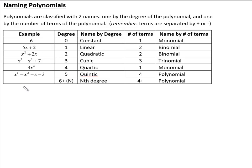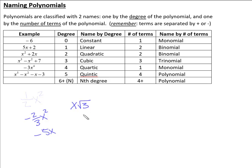So a couple things to know about polynomials: they always have rational coefficients, which means we'll see things like one-half x squared or negative two-thirds x squared. It can have a fraction or a whole number — like negative 5x. The numbers in front of our variables are either nice fractions or whole numbers, but they'll never be irrational. So we won't see things like x root 3 or pi x — we'll never see any of those.